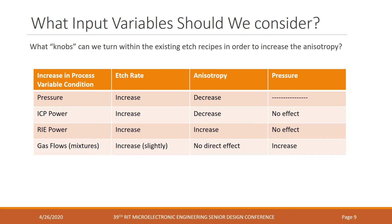Now that we know what anisotropy is, we need to consider what knobs we have available to tune it. While the specific gas plays a significant role, there are too many gases that can etch a given film to pursue all of them, so I chose to stick with gases already plumbed to the tool. The major inputs are chamber pressure, ICP power, and RIE power. Gas flows have some effect on the final etch rate but play a relatively small role in setting the degree of anisotropy.